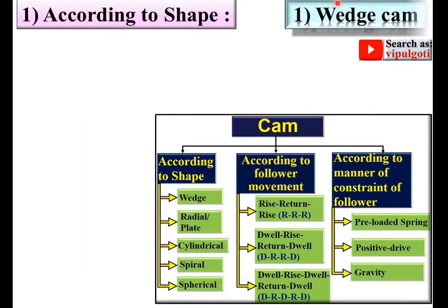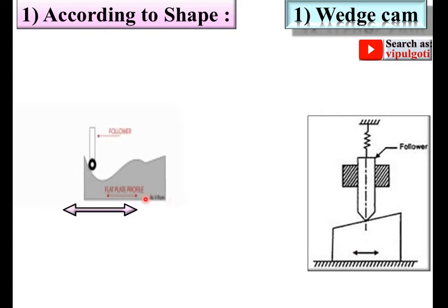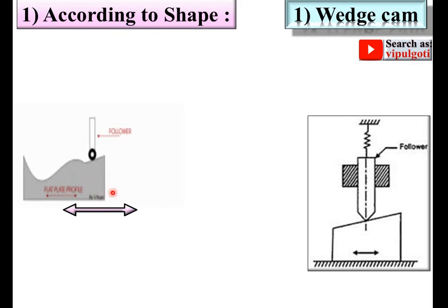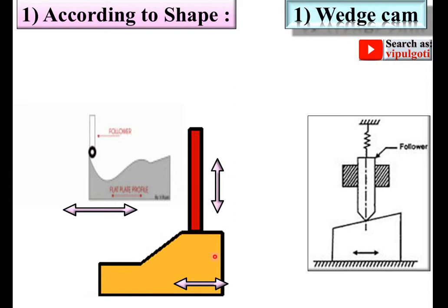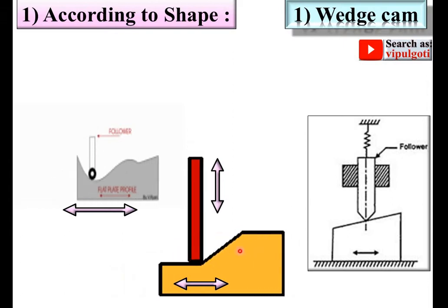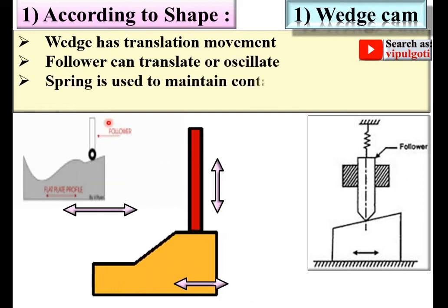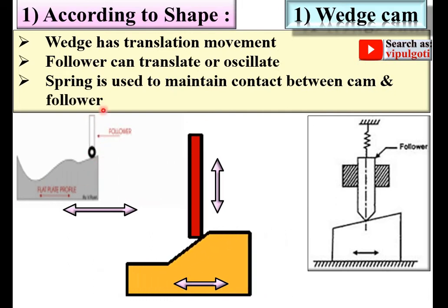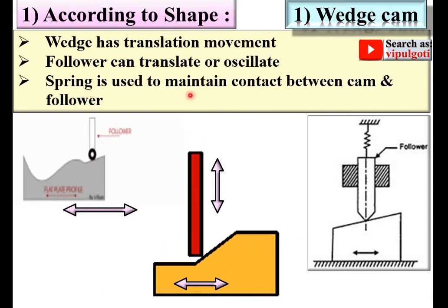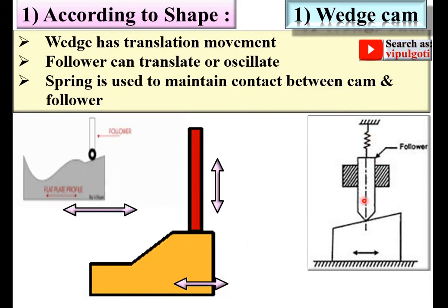The first type is the wedge cam. This is the wedge cam — the shape is like a wedge, that's why it is called a wedge cam. Here you can see the cam is reciprocating, and so the follower is also reciprocating. The wedge has translatory movement, and the follower can translate or oscillate. A spring is used to maintain contact between the cam and follower.